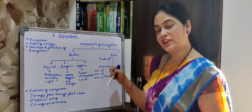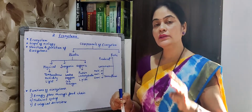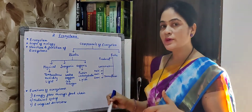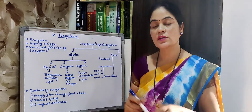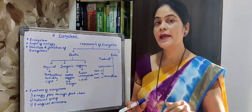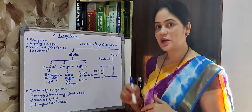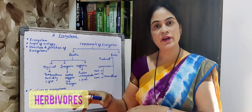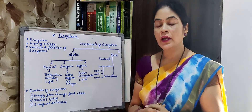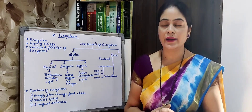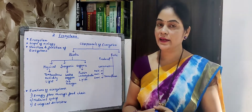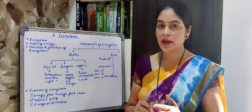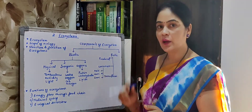Consumers are further divided into three categories depending on their food habit. First one is herbivores. Herbivores means those who eat only herbs — only plants, only producers. Their food habit is such that they eat only plants. For example, cow, deer, zebras — all these animals are included in the herbivores category.